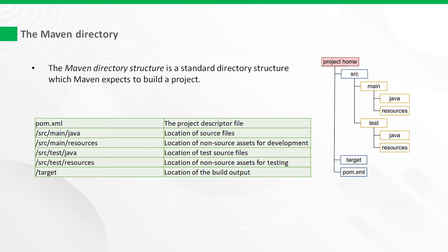Test files go into /src/test/java. Similarly, non-code resource files such as Excel files, property files, or XML files used for testing can be placed under /src/test/resources. Target is the standard location for your project's output. Dependencies you have downloaded will reside in the /target directory, along with your compiled application artifacts.